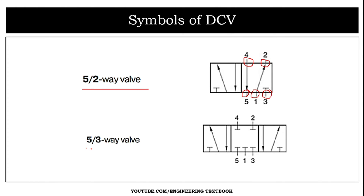The five by three DCV has three positions — three boxes — and five ports. It is similar to the five by two valve, with the only difference being that it has a center position, whereas the five by two valve does not. These were the symbols of direction control valves.